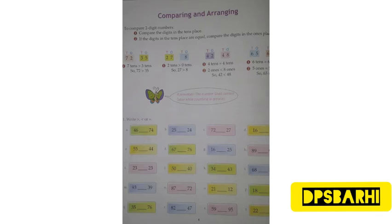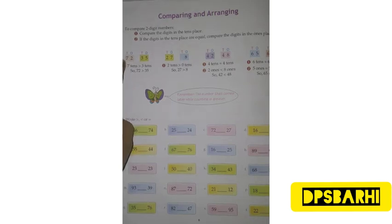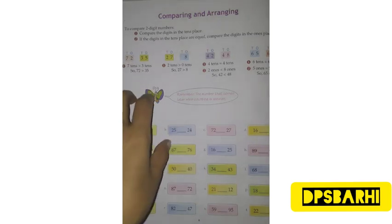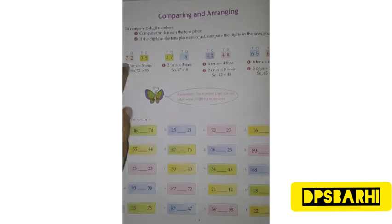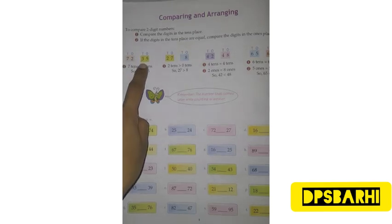Step 1 is to compare the digit in the tens place. First, we will compare the digit in the tens place, then we will decide which one is bigger and which one is smaller. In this example, the tens place is 7 and the tens place is 3.